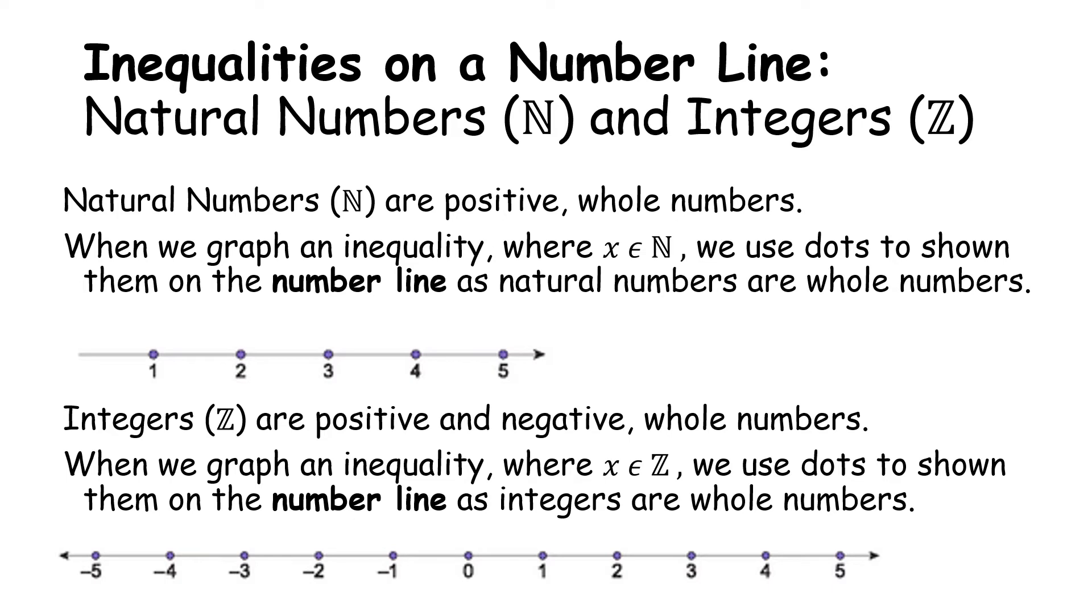Before we start looking at some examples, let's do a quick revision of our numbers. The three types of numbers that we see are natural numbers, which are denoted by an N, integers which are denoted by a Z, and the real numbers which are denoted by an R. Natural numbers are positive whole numbers and when we are graphing these on the number line they appear as dots because we only want to include those particular whole numbers. Integers are positive and negative whole numbers. When we graph an inequality on the number line that are integers, we use dots because we only want those whole numbers to be included.